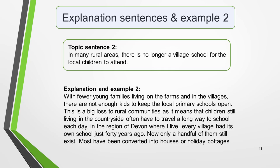Next we need to develop topic sentence 2, about the negative effect on village schools. 'With fewer young families living on the farms and in the villages, there are not enough kids to keep the local primary schools open. This is a big loss to rural communities, as it means that children still living in the countryside often have to travel a long way to school each day. In the region of Devon where I live, every village had its own school just 40 years ago. Now only a handful of them still exist. Most have been converted into houses or holiday cottages.' Again we have a couple of sentences containing extra information and an example — which in this case is true.